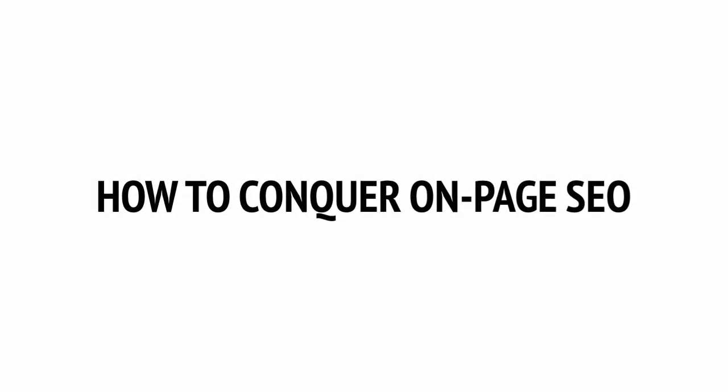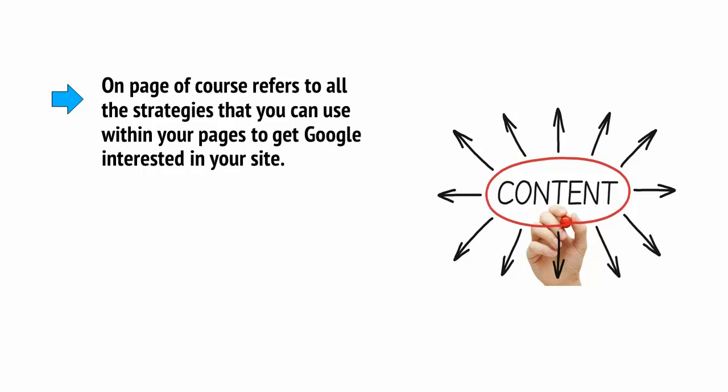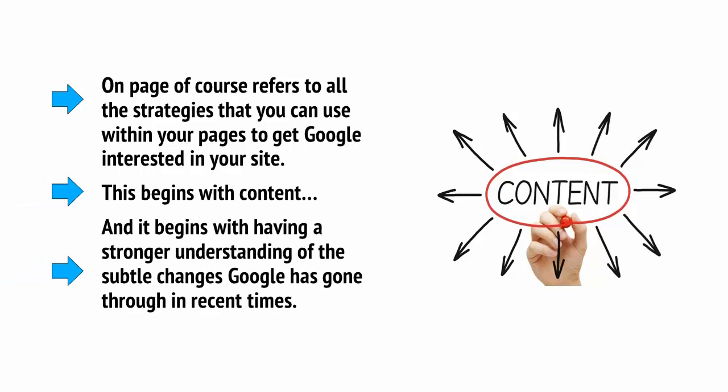Regardless of all the changes that have happened, it's still possible to separate our SEO into largely on-page and off-page. I'm going to talk about on-page now and off-page in the next video of this series, but both are important. On-page refers to all the strategies that you can use within your pages to get Google interested in your site. This begins with content, and with having a stronger understanding of the subtle changes Google has gone through in recent times.